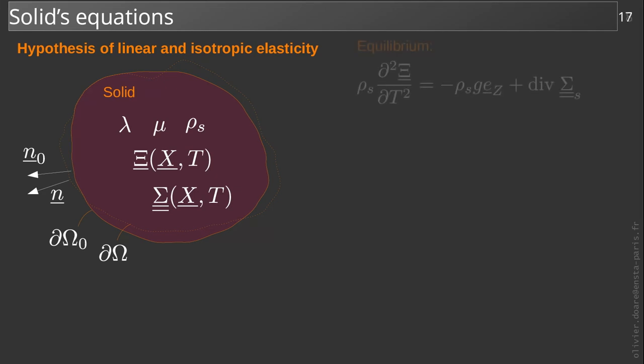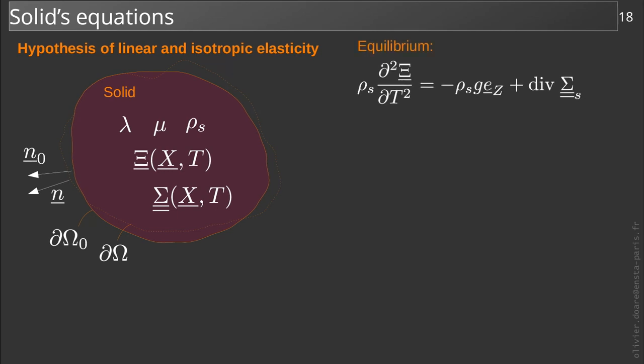The fundamental equation governing the dynamics of an elementary particle of the solid is written as follows. The first term is the acceleration of this particle. The second term is an external volumic force, here due to gravity. And the last term comes from the internal stresses in the material.